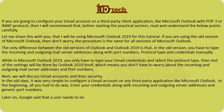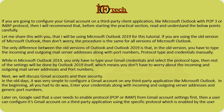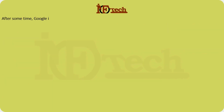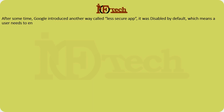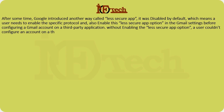Later on, Google said that a user needs to enable the protocol — POP or IMAP — from Gmail account settings first, then configure the Gmail account on a third-party application using the specific enabled protocol. After some time, Google introduced another way called 'Less Secure App', which was disabled by default. A user needed to enable the specific protocol and also enable this Less Secure App option in Gmail settings before configuring a Gmail account on a third-party application.